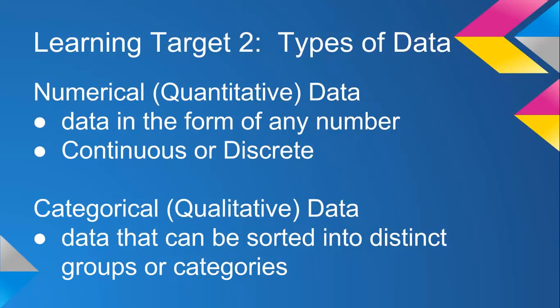The second learning target we're going to talk about is types of data. We've talked about numerical data as continuous or discrete, it takes any number, continuous or discrete, and we've talked about that a lot in our last unit on the normal distribution.